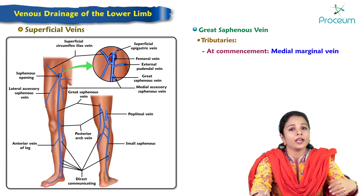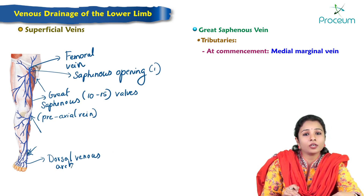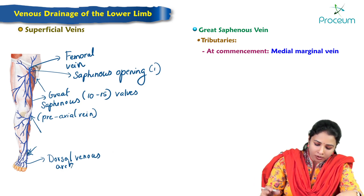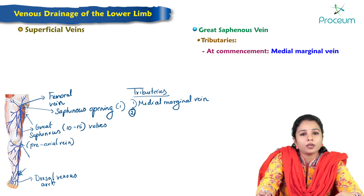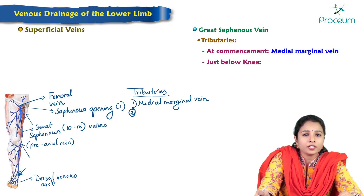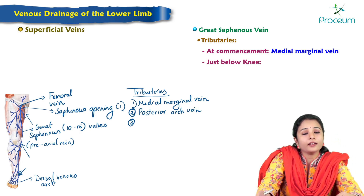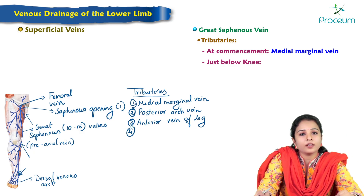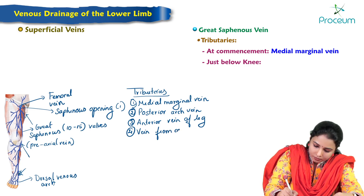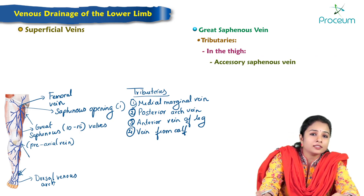Regarding the tributaries of the great saphenous vein at commencement: when it originates from the medial dorsal venous arch, it receives the medial marginal vein from the sole. Just below the knee, tributaries include the posterior arch vein, anterior vein of the leg, and a vein from the calf.